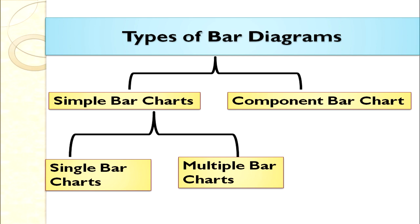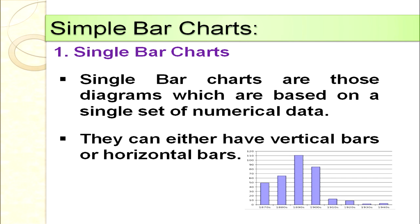There are mainly two different types of bar diagrams: simple bar charts and component bar charts. Within simple bar charts, we can also discuss single bar charts where a single data set is given, and multiple bar charts where two or more data sets are given. Let's first discuss the simple bar chart: simple bar charts are those diagrams which are based on a single set of numerical data. The bars can be vertical or horizontal, but we always go for vertical bars.